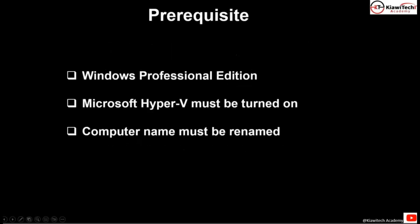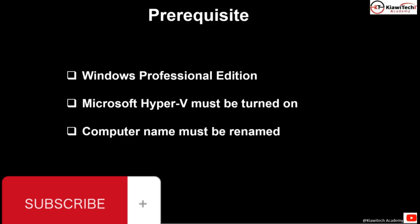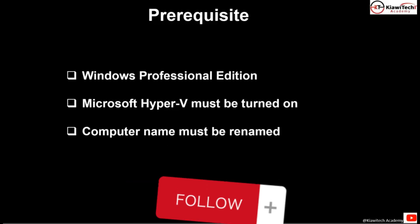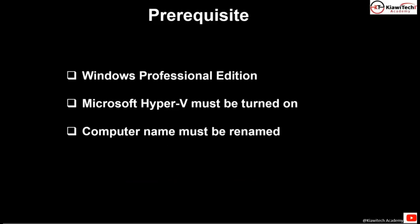Now in order to virtualize your environment there are still prerequisites that you need to make sure your computer meets. One of the first things is you want to make sure that the laptop you're working on has the minimum Windows Professional edition. You could have any edition above this — Enterprise or Education — but the minimum OS version should be Windows Professional edition.